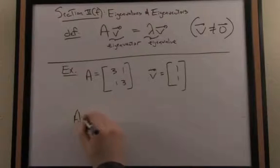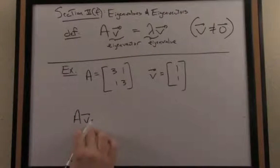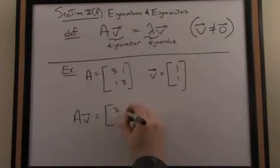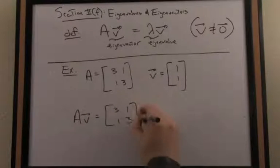So what is the result of multiplication here? A on the left times V. So I multiply the matrix [3, 1; 1, 3] times the vector [1; 1].